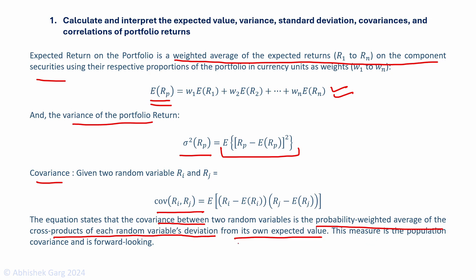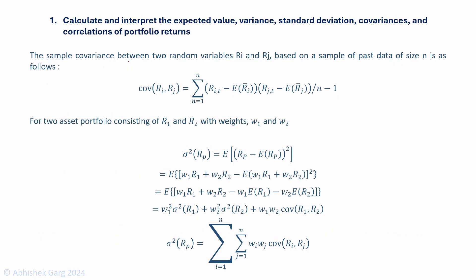This measure is the population covariance and it is forward-looking — it is the true covariance of the population, not calculated from a sample. The sample covariance between two random variables Ri and Rj, based on past data, is calculated by dividing by n minus 1.